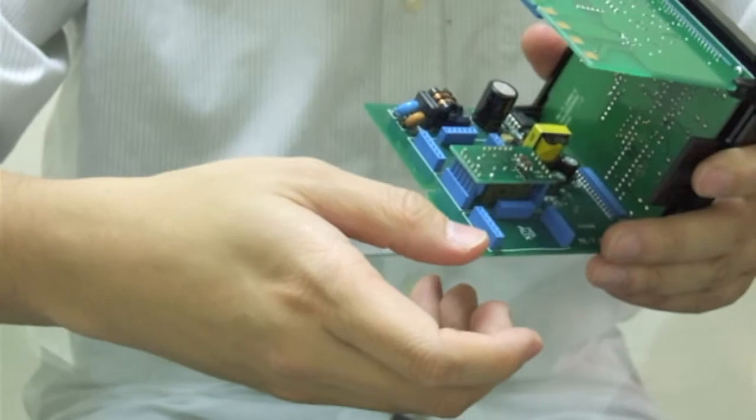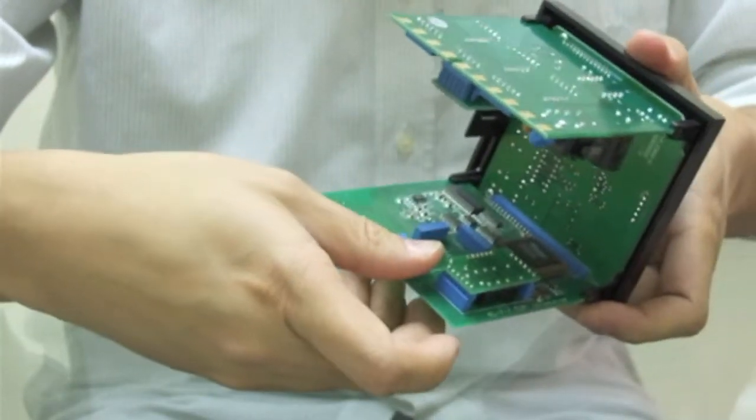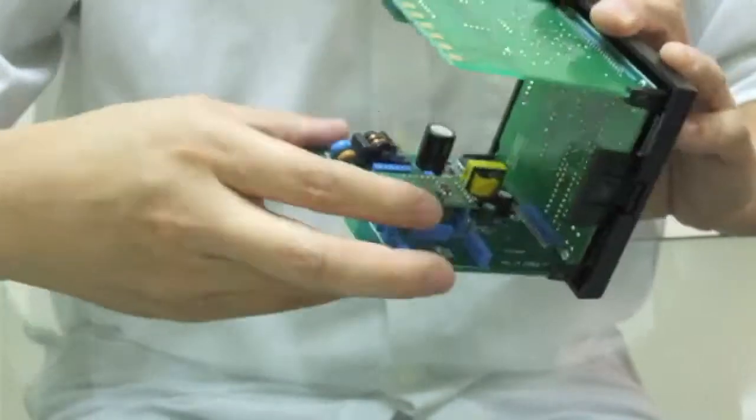On one side of the PCB board, you will see three module slots, and on the other side, you will see two.